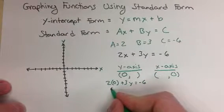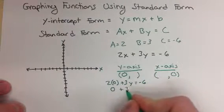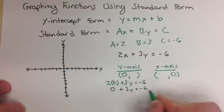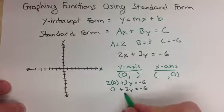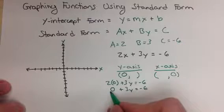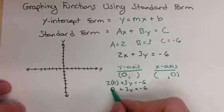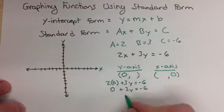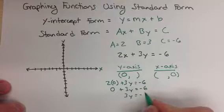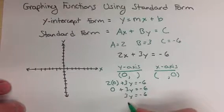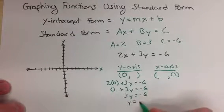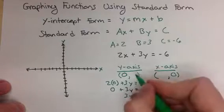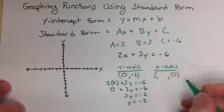2 times 0 is 0, plus 3y equals negative 6. Divide by 3 on both sides. Since 0 doesn't actually do anything, we don't even really have to write that. We would just have 3y equals negative 6, divide by 3 on both sides, and y equals negative 2. So on the y axis, it's 0, negative 2.